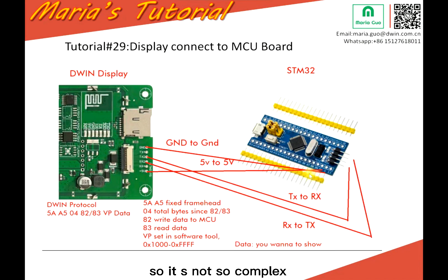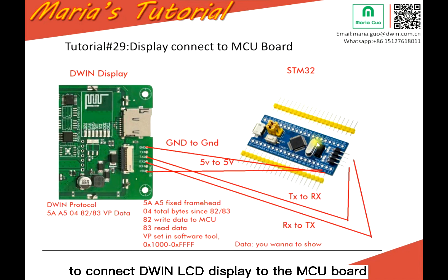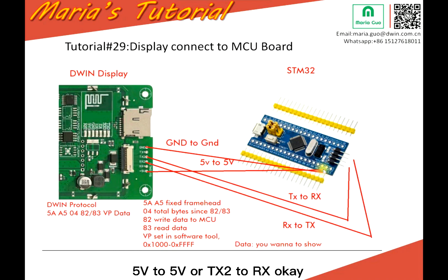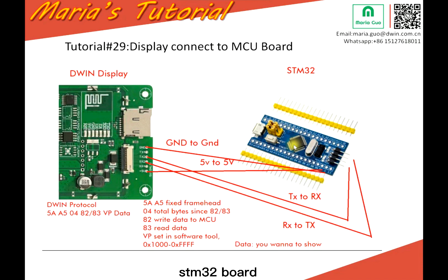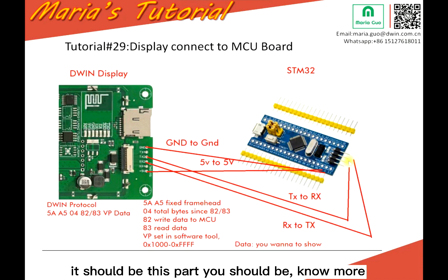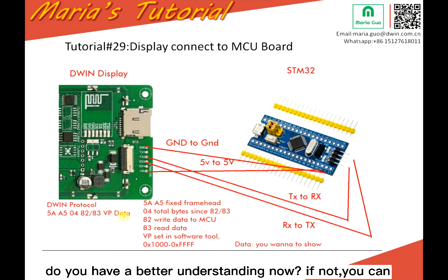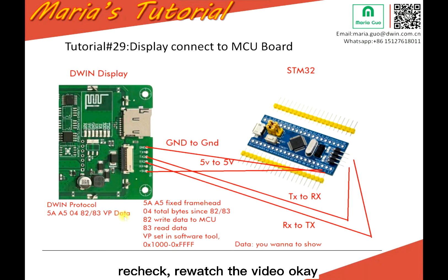It's not too complex to connect the D1 LCD display to the MCU board. To recap: GND to GND, 5V to 5V, and TX2 to RX on the MCU board. For this STM32 board, you should know more than me about its specific pins. Do you have a better understanding now? If not, you can rewatch the video. Bye-bye, have a nice day.